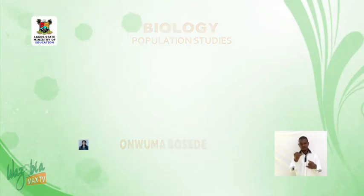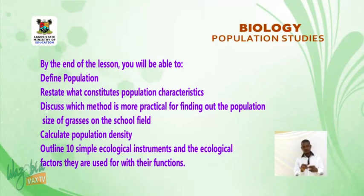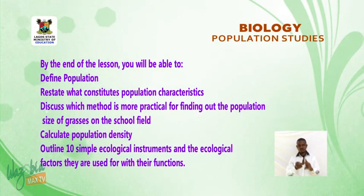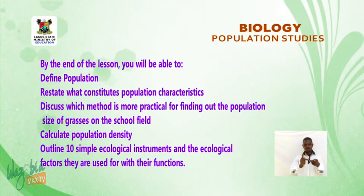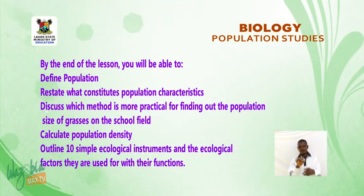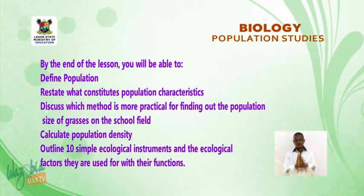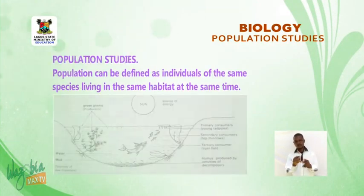By the end of the lesson, you will be able to: define population; restate what constitutes population characteristics; discuss which method is more practical for finding out the population size of grasses on the school field; calculate population density; and outline 10 simple ecological instruments, the ecological factors they are used for, and their functions.